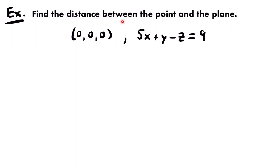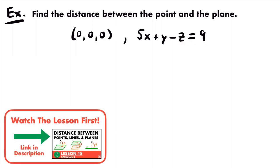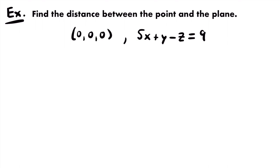We want to find the distance between the point and the plane. We have a point of (0, 0, 0), or the origin, and a plane equation of 5x + y - z = 9. If you want to find the distance between a point and a plane, you need to know the distance formula between a point and a plane in a 3D coordinate system.